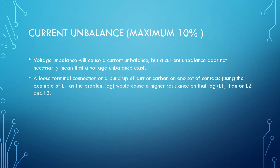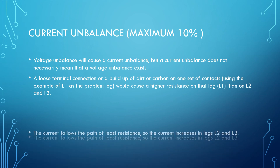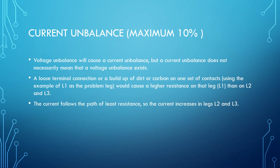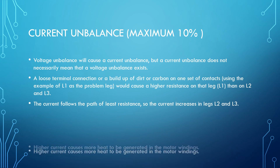A loose terminal connection or a buildup of dirt or carbon on one set of contacts — using the example of L1 as the problem leg — would cause a higher resistance on that leg, L1, than on L2 and L3. The current follows the path of least resistance, so the current increases in legs L2 and L3.